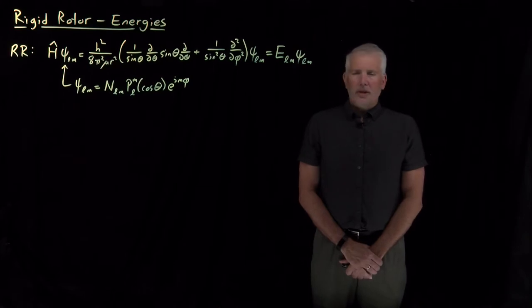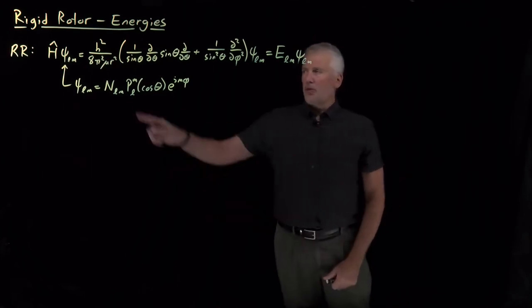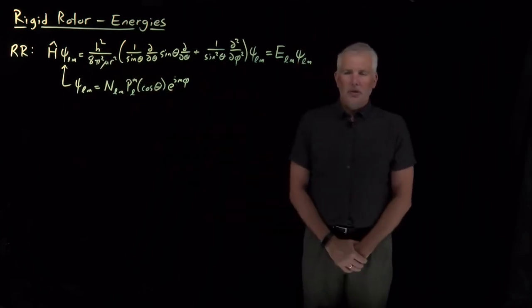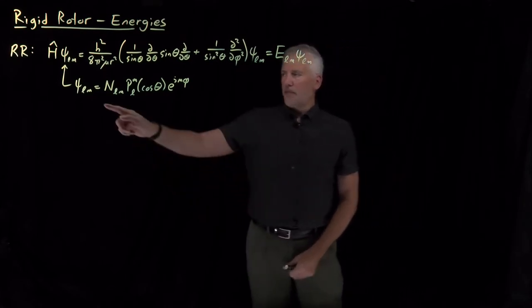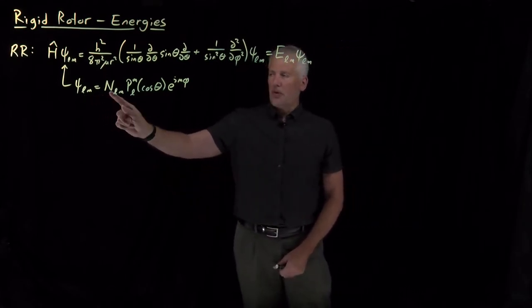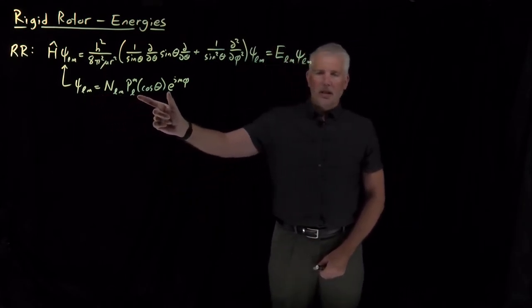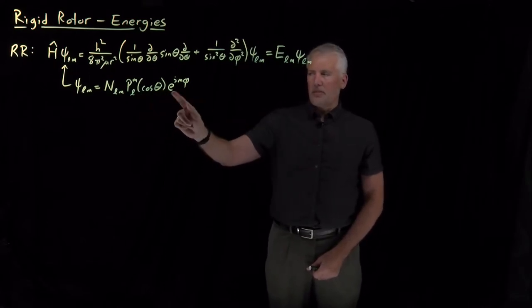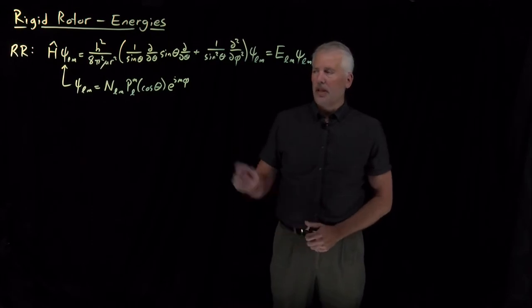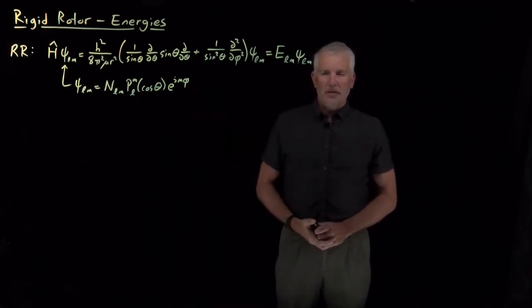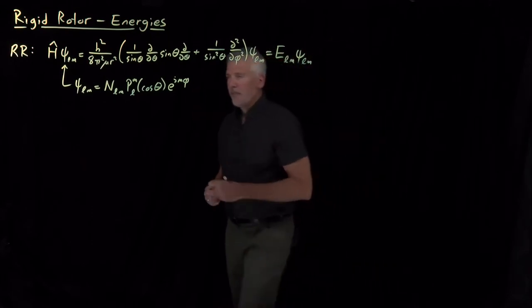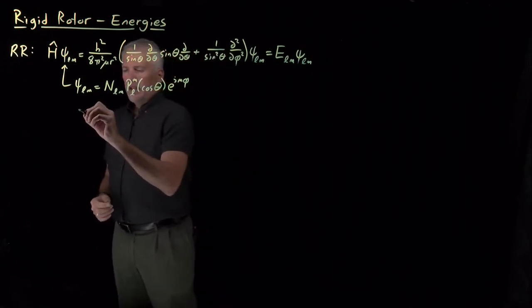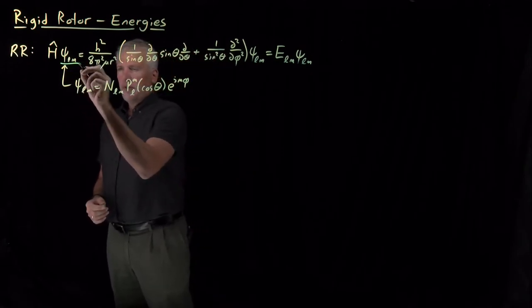What we know about the rigid rotor so far is once we've written down the rigid rotor Hamiltonian, we can write down solutions, wave functions that have the form: some normalization constant, a Legendre polynomial that describes the theta dependence, and then this exponential, imaginary exponential, that describes the phi dependence. We've seen a few cases of this wave function so far.